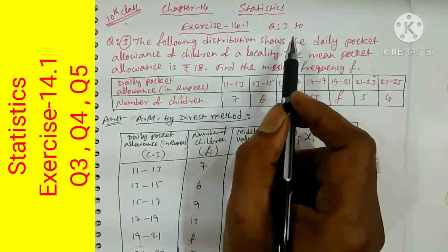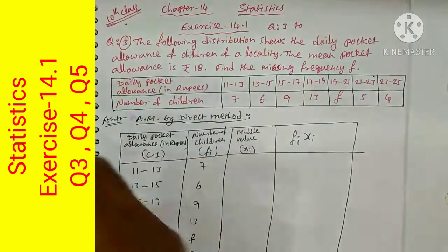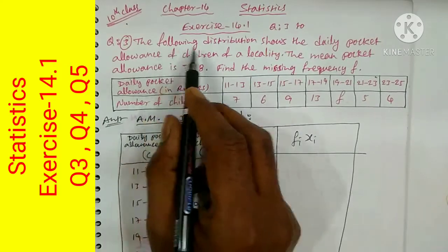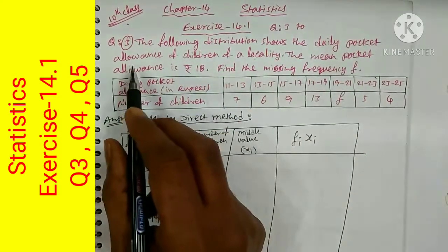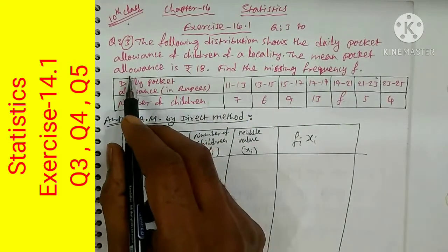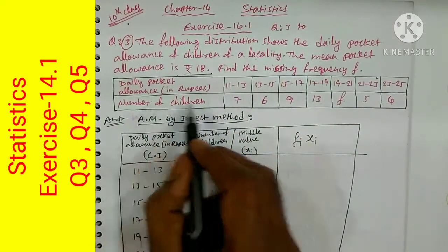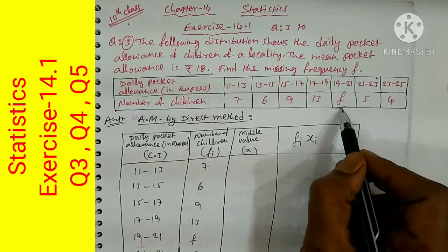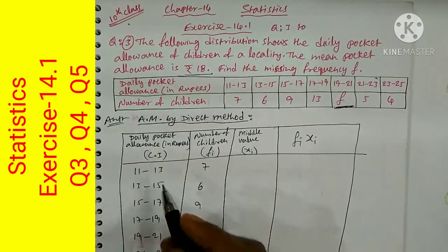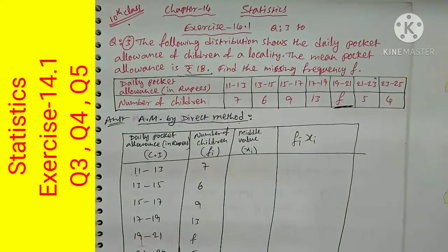Statistics exercise 14.1 up to question number 2 we have finished in the previous videos. Now we have to start with question number 3. The following distribution shows the daily pocket allowance of children of a locality. The mean pocket allowance is given as 18, and we have to find the missing frequency F. Because of the small values, I am choosing the direct method — arithmetic mean by direct method.